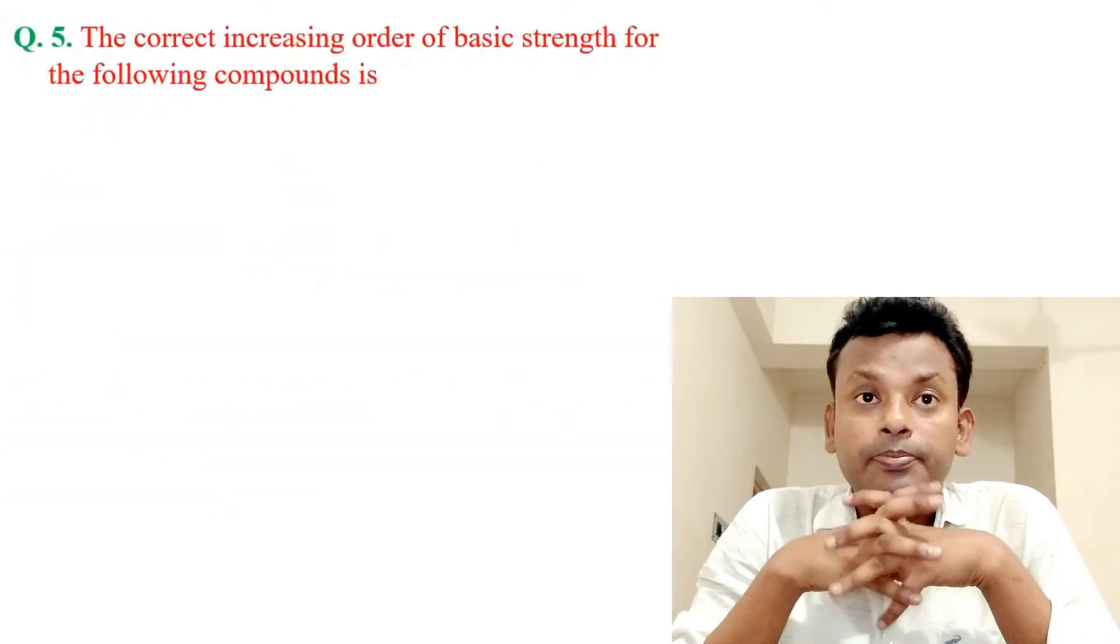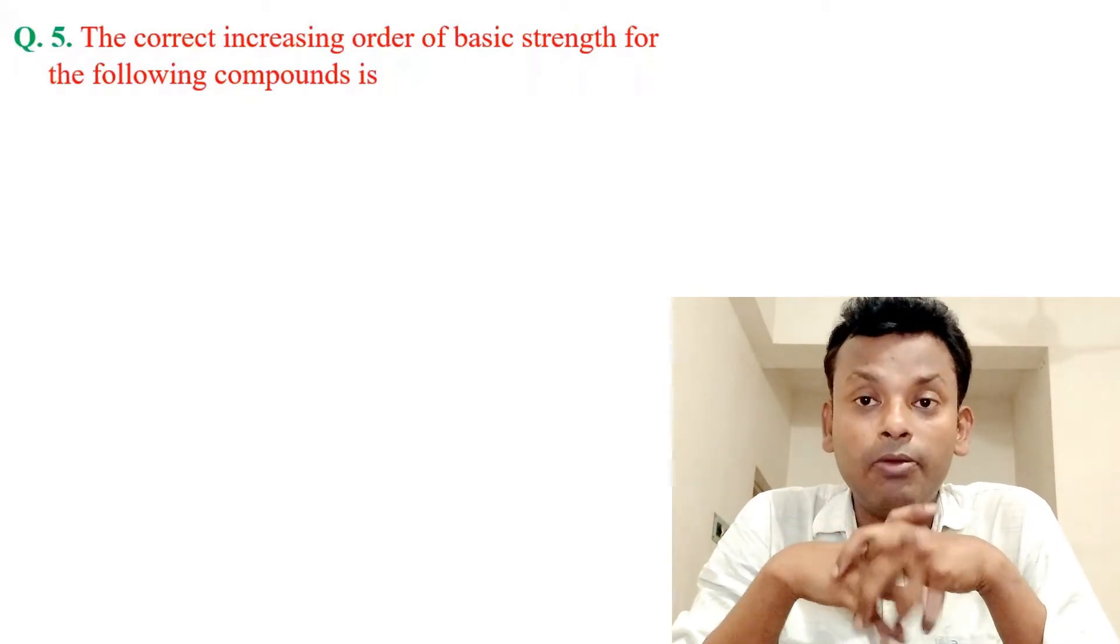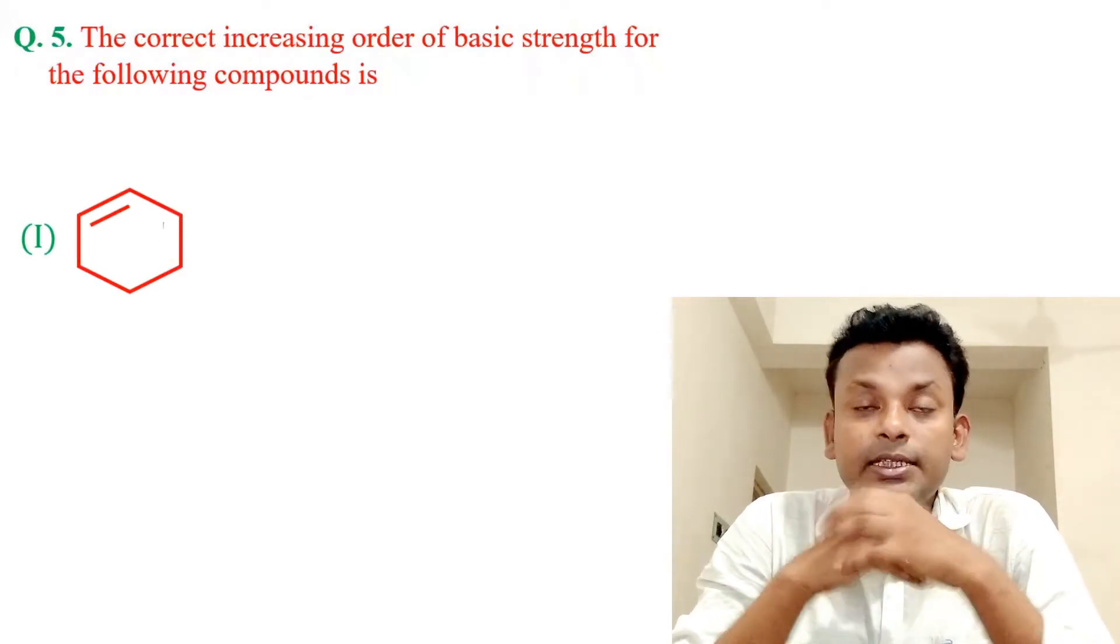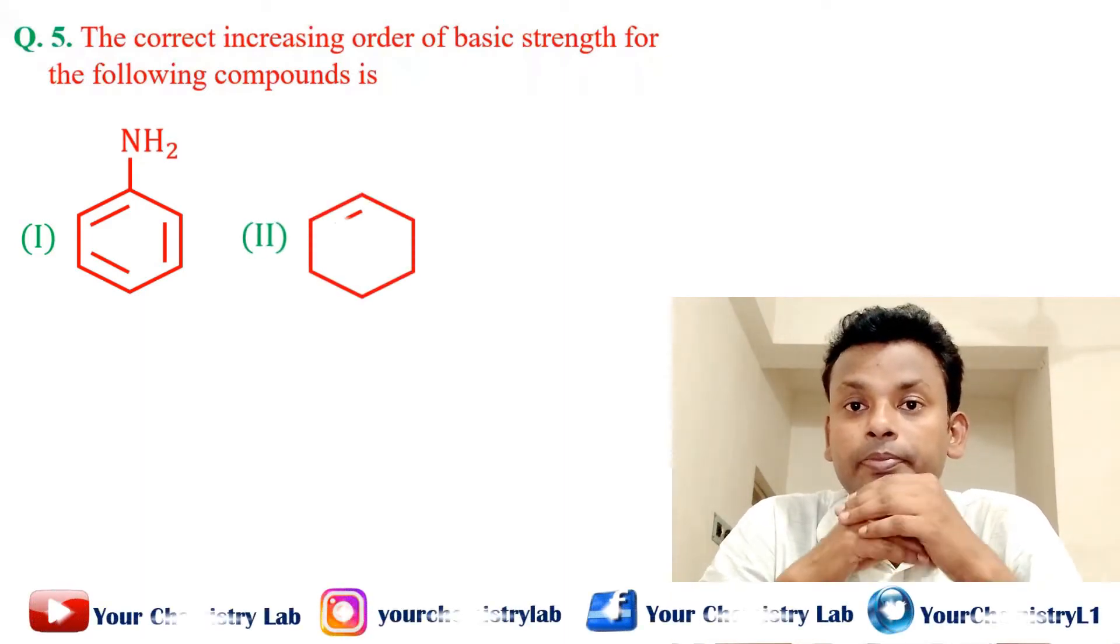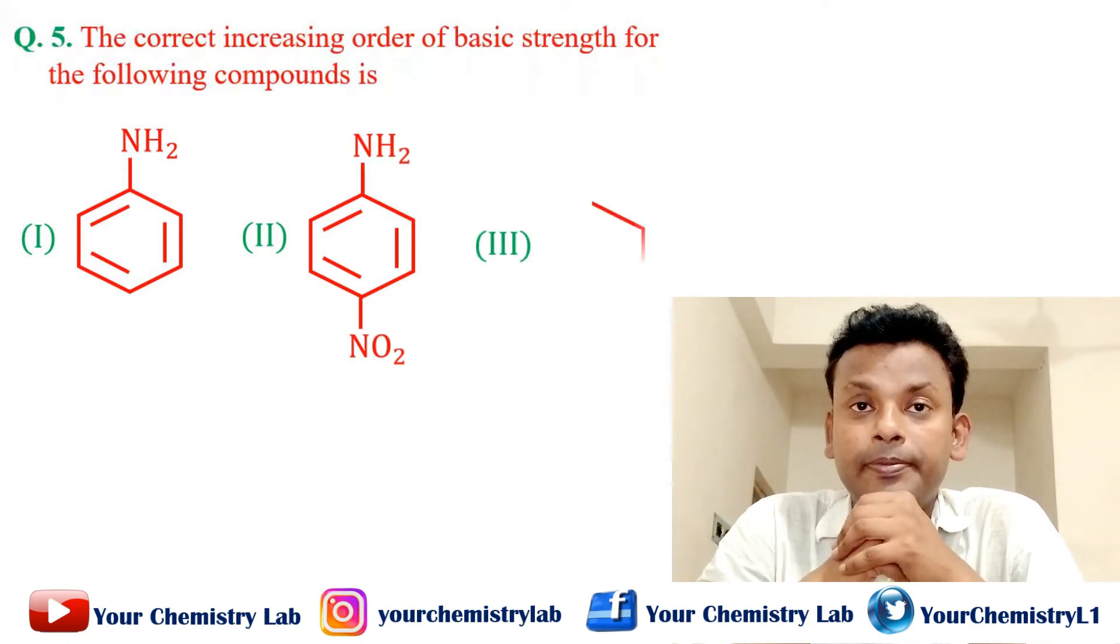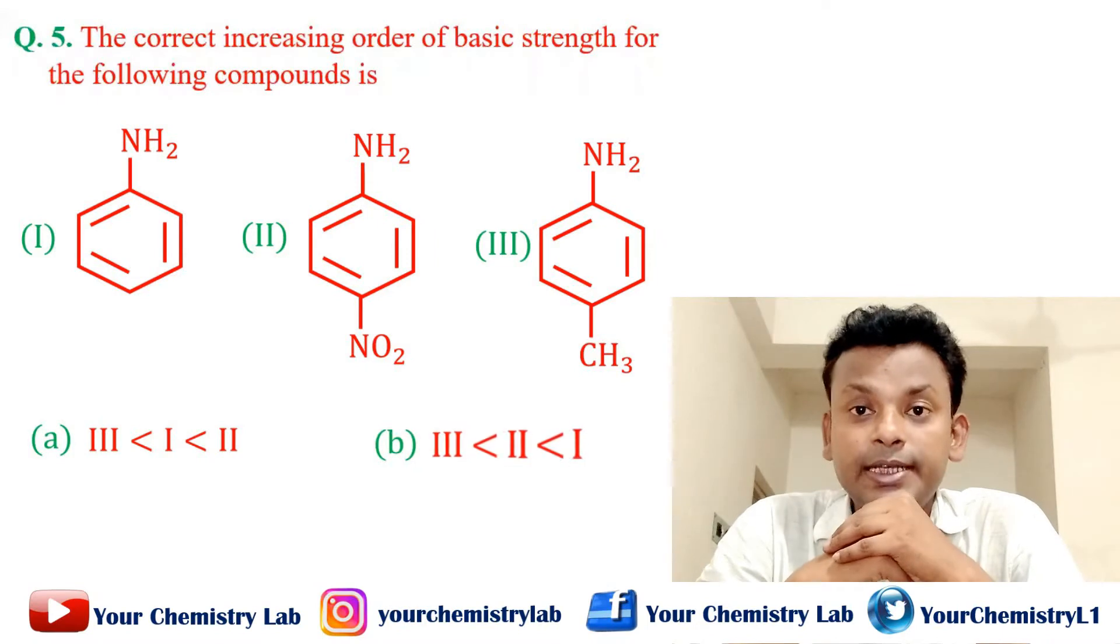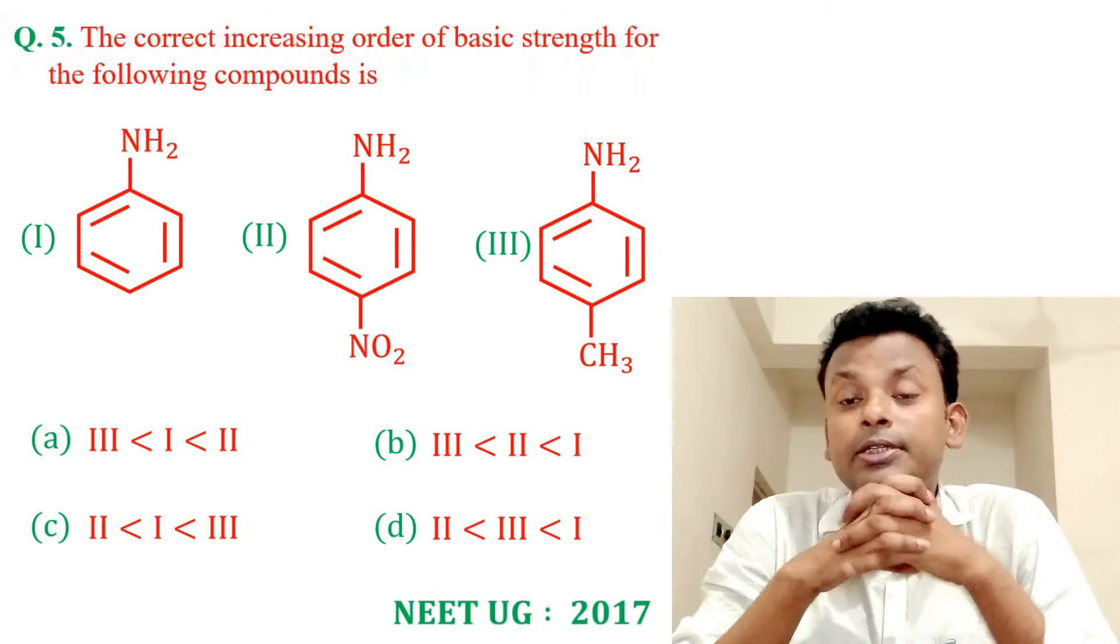Question number five: The correct increasing order of basic strength for the following compounds is compound 1, that is aniline, compound 2, that is para-nitroaniline, compound 3. Option A, option B, option C, and option D.